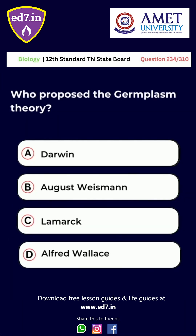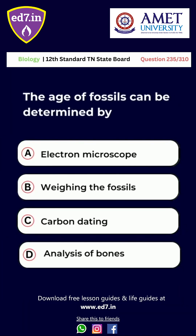Question number 234: Who proposed the germplasm theory? A. Darwin. B. August Weismann. C. Lamarck. D. Alfred Wallace. The right answer for this question is option B, August Weismann.